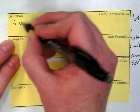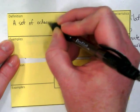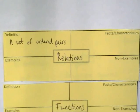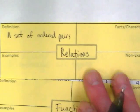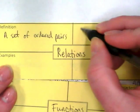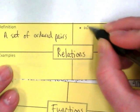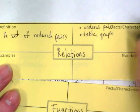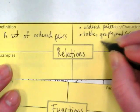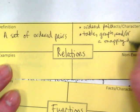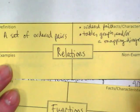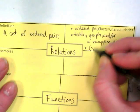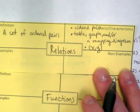A relation is a set of ordered pairs. That means the X, Y pairs are going to be really important when we're dealing with these. Some characteristics: we have ordered pairs; they can be shown in a table, a graph, or what's called a mapping diagram. X, Y pairs are very important — those are all characteristics of relations.